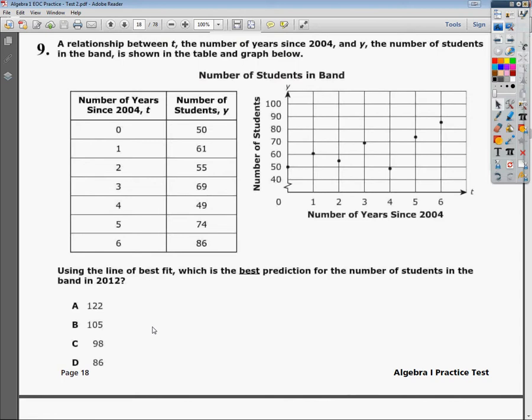So they give you a table and a graph, which is kind of nice. The question says, using the line of best fit, what is the best prediction for the number of students in the band in 2012?